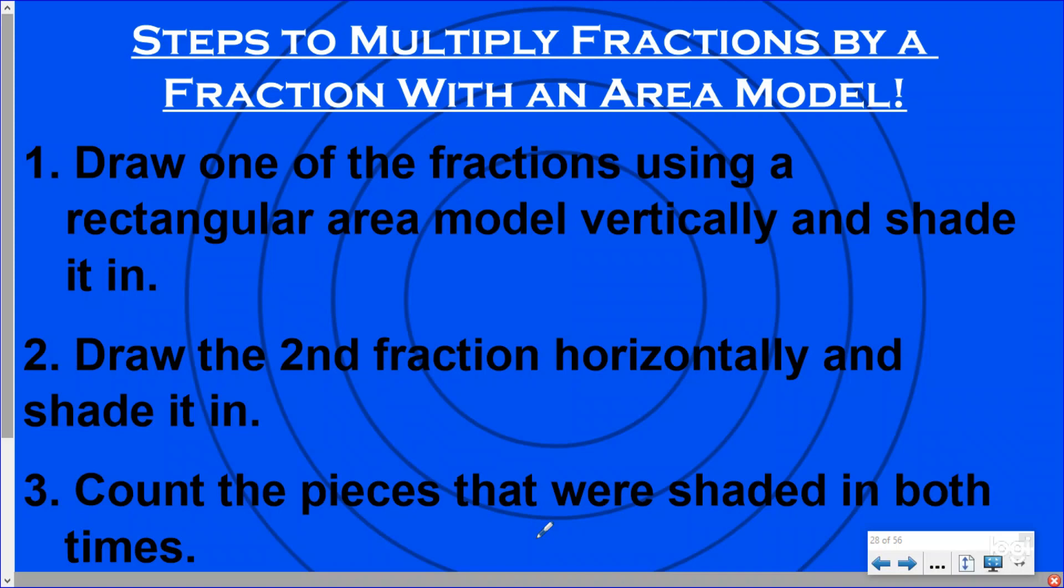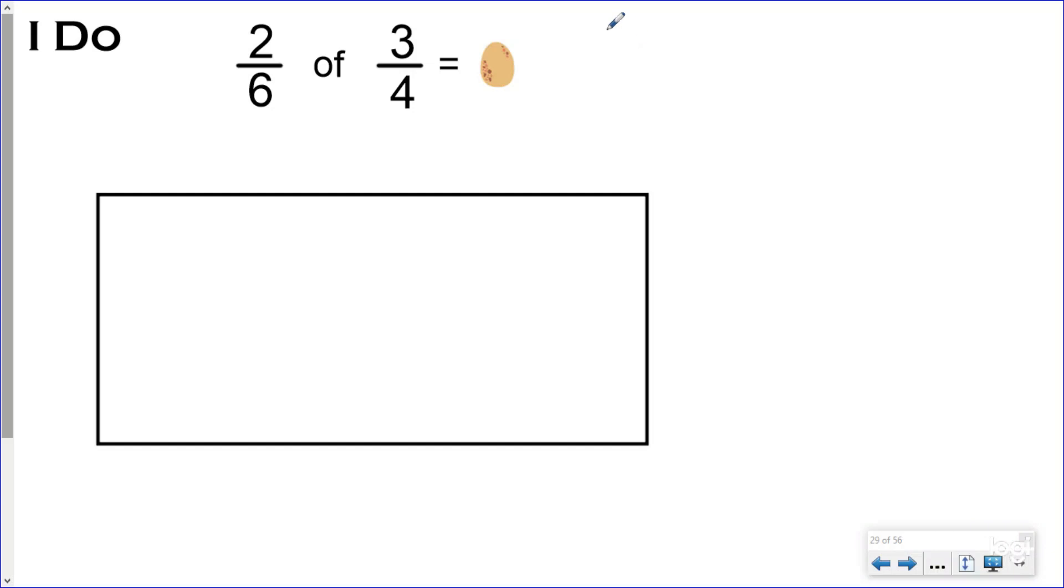So here we have the I do. I want to know what is two-sixths of three-fourths, and I'm going to be using my dinosaur egg as my variable. Let's see what dinosaur is trying to scratch its way out of this egg. We know that finding a fraction of another fraction really means that we are multiplying, but today we're going to explore that with our area model. So I'm going to start by splitting my area model vertically into four equal pieces because that was my denominator. And so I'm going to have three-fourths, which means I want one, two, three-fourths, and I'm going to shade it in.